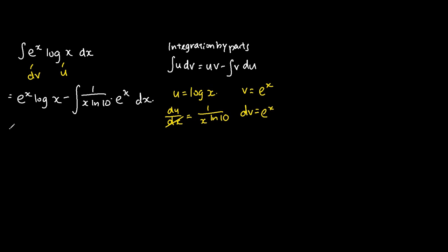Alright, so 1 over ln 10 is constant, so we put it out of the integration sign. So we have just e to the power of x over x dx. Ok, here is the trouble. So how do we go about integrating e to the power of x over x dx?